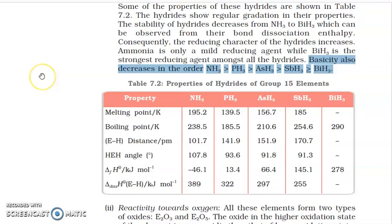Basic character — write this as a separate point: basic character of hydrides of Group 15. All hydrides are basic in nature. How do we decide a base? First definition: bases release OH⁻ ions. Where there is no OH⁻, bases are those which accept H⁺ ions. All these can accept H⁺ ions — you've heard of NH4⁺, PH4⁺. Third definition: bases have a lone pair of electrons. Nitrogen has valency 5, forms 3 bonds, leaving one lone pair. All have a lone pair, so all hydrides are basic in nature.